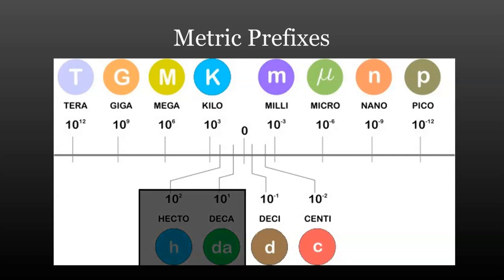We will not be using HECTO or DECA, so don't worry about those prefixes. You may run across the prefixes PETA with a capital P or FEMTO with a lower case F. These correspond to ten to the positive or negative 15, respectively.